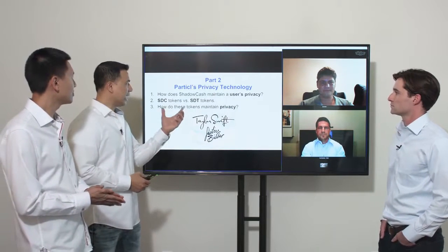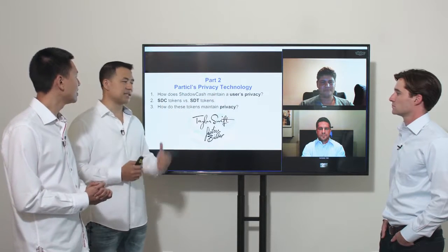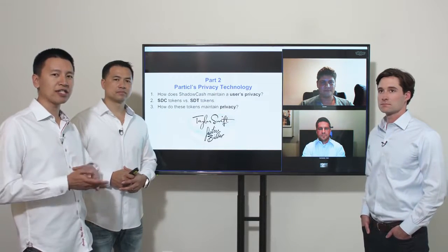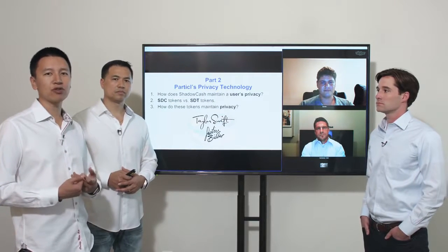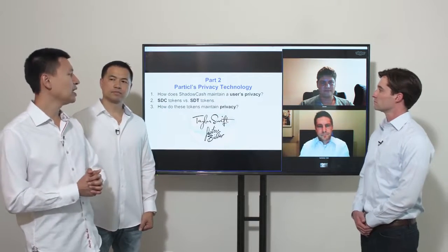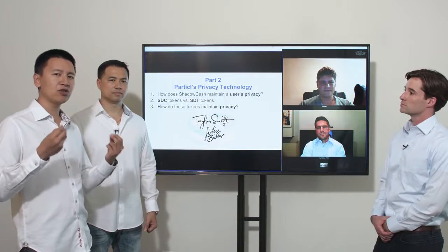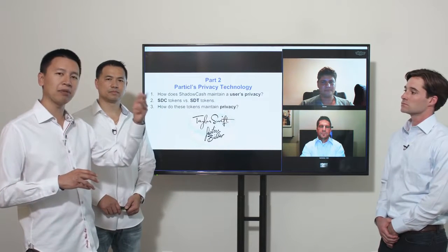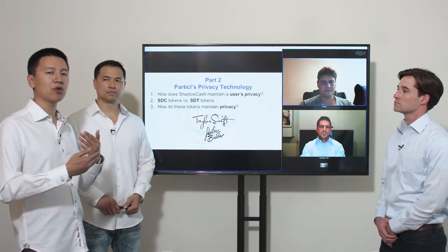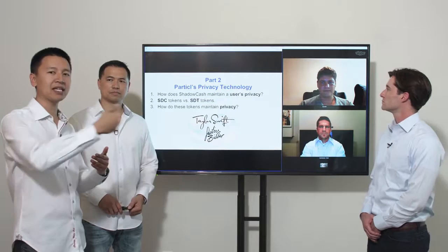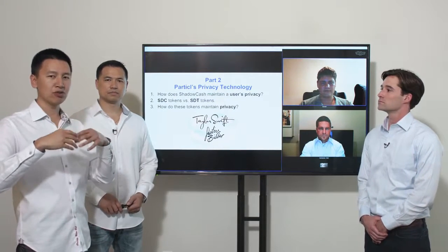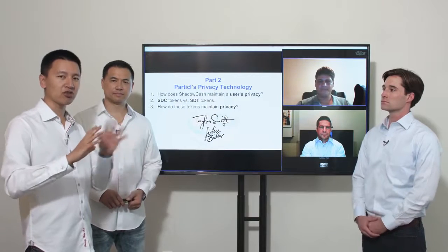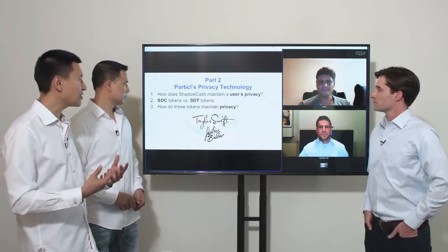So can you explain to the audience how ShadowCache used the SDC and SDT tokens? Based on our research, since Particle has its history in ShadowCache, ShadowCache protected a user's privacy using ring signatures. ShadowCache had two tokens — SDC and SDT — referring to the public balance and the private balance. You could exchange your public balance into your private balance and back again, and the private balance used ring signatures to obfuscate or hide the transaction history.